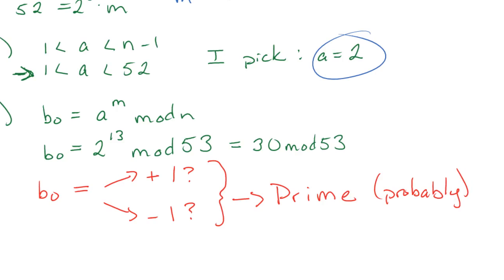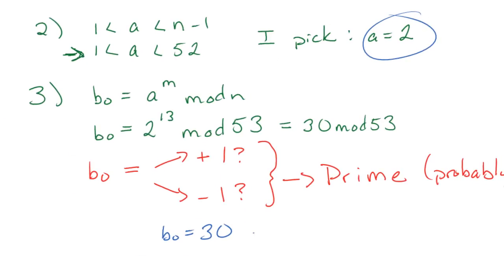Okay, so for b0, if it's positive 1 or negative 1, it's probably prime. However, our b0 was 30. It is not a positive 1. It is not negative 1. So we have to move on to calculate b1.